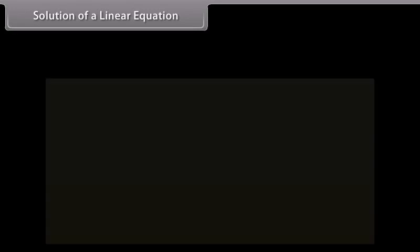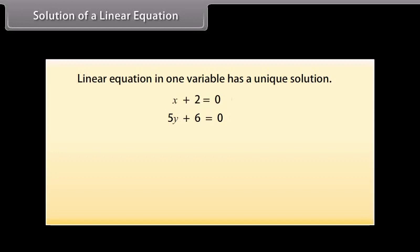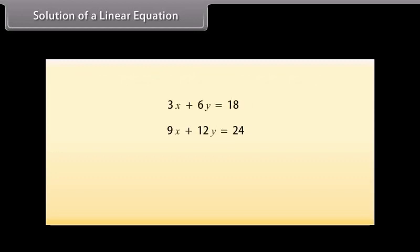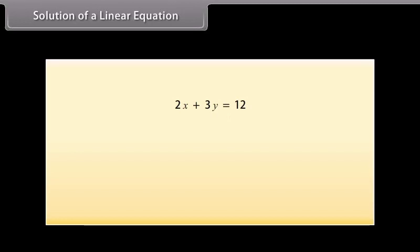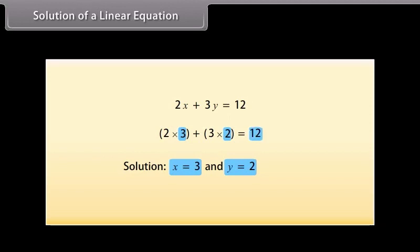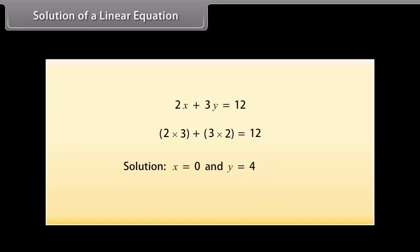Every linear equation in one variable has a unique solution. But how many solutions do linear equations in two variables have? Since there are two variables, a solution means a pair of values — one for X and one for Y — which satisfy the given equation. For 2X plus 3Y equals 12, X equals 3 and Y equals 2 is a solution because substituting gives 12. We write this as the pair (3, 2). Similarly, (0, 4) is also a solution because substituting X as 0 and Y as 4 gives 12.